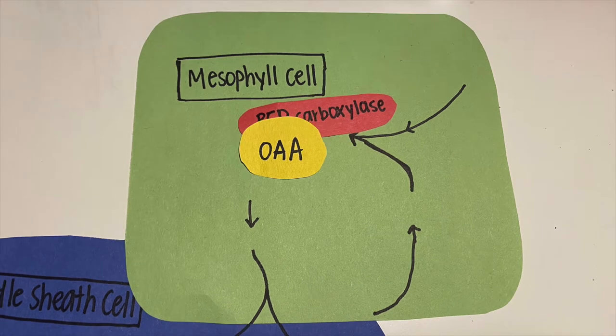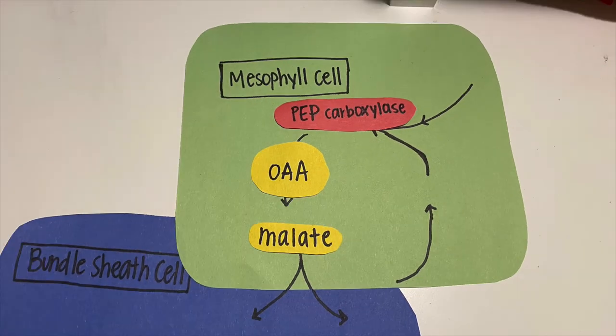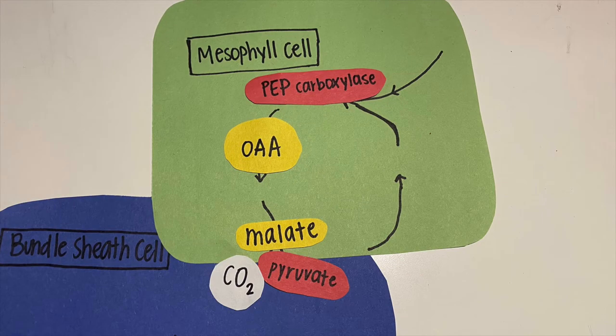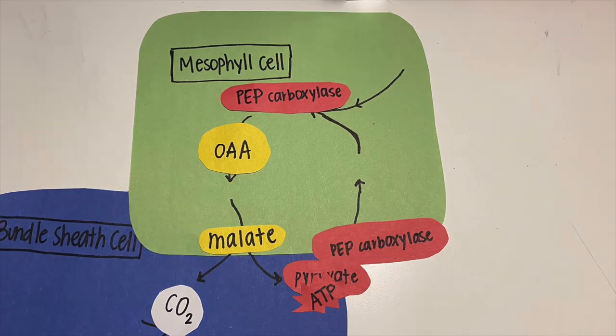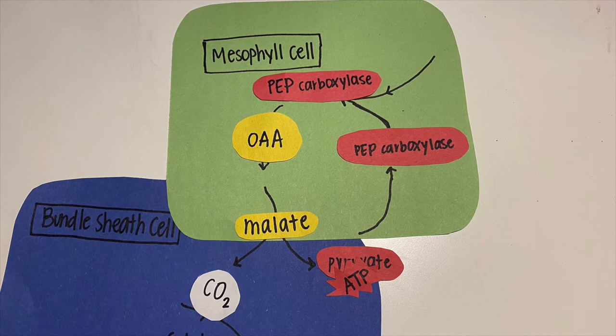The 4-carbon acid then forms malate, which cycles into the bundle sheath cell and releases pyruvate, a 3-carbon acid, and carbon dioxide. The pyruvate cycles back into the mesophyll cell and using ATP forms PEP carboxylase and the cycle starts again.